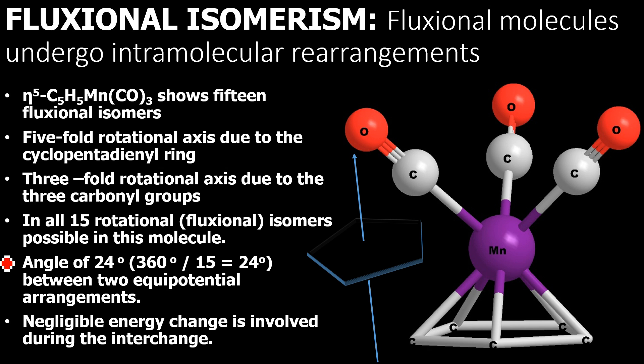Intramolecular means within the molecule, and the example we are going to take is η⁵-C₅H₅Mn(CO)₃. This is an organometallic complex of manganese. The ligands are carbon monoxide, known as carbonyl, and cyclopentadienyl anion which has hapticity 5.